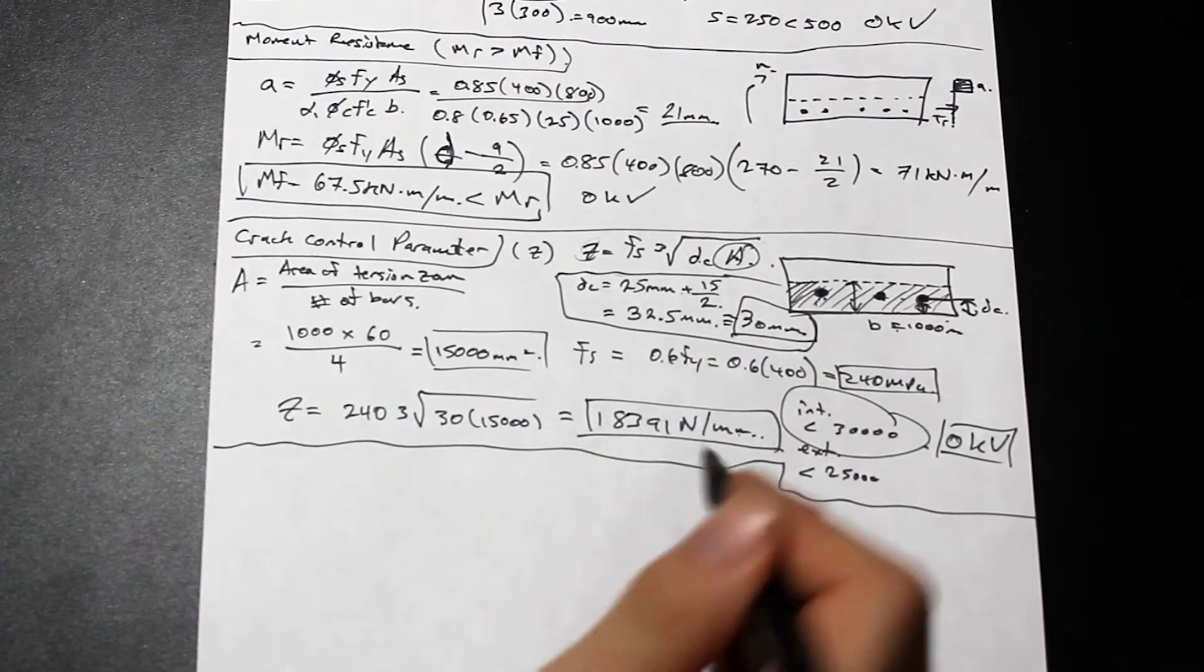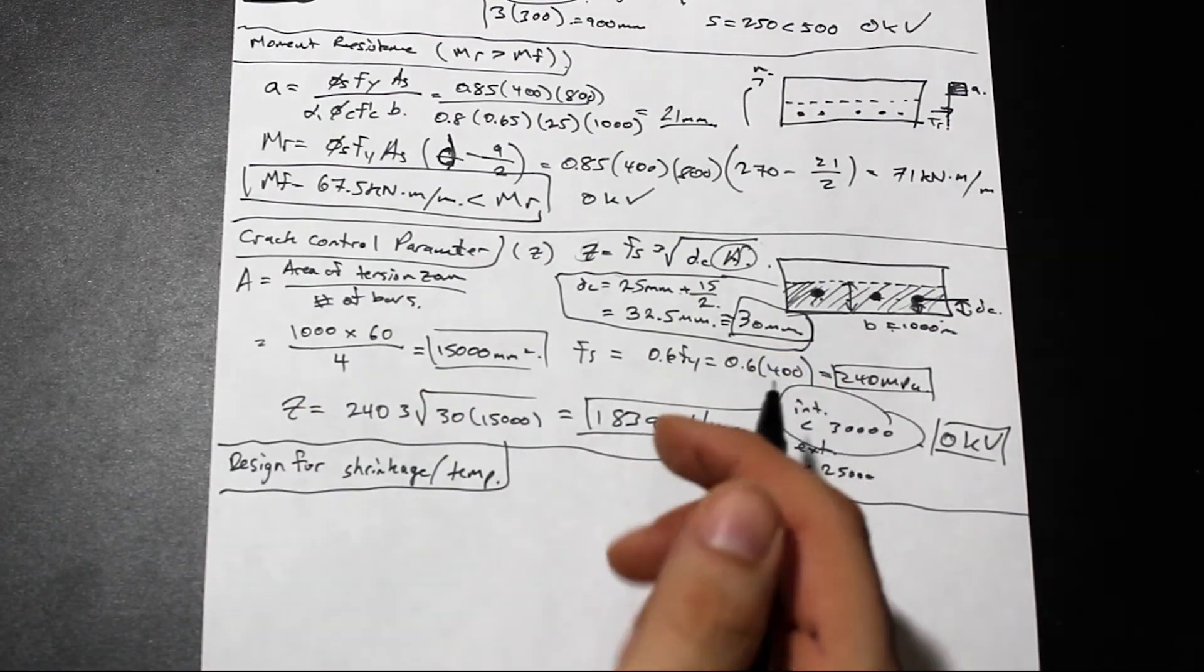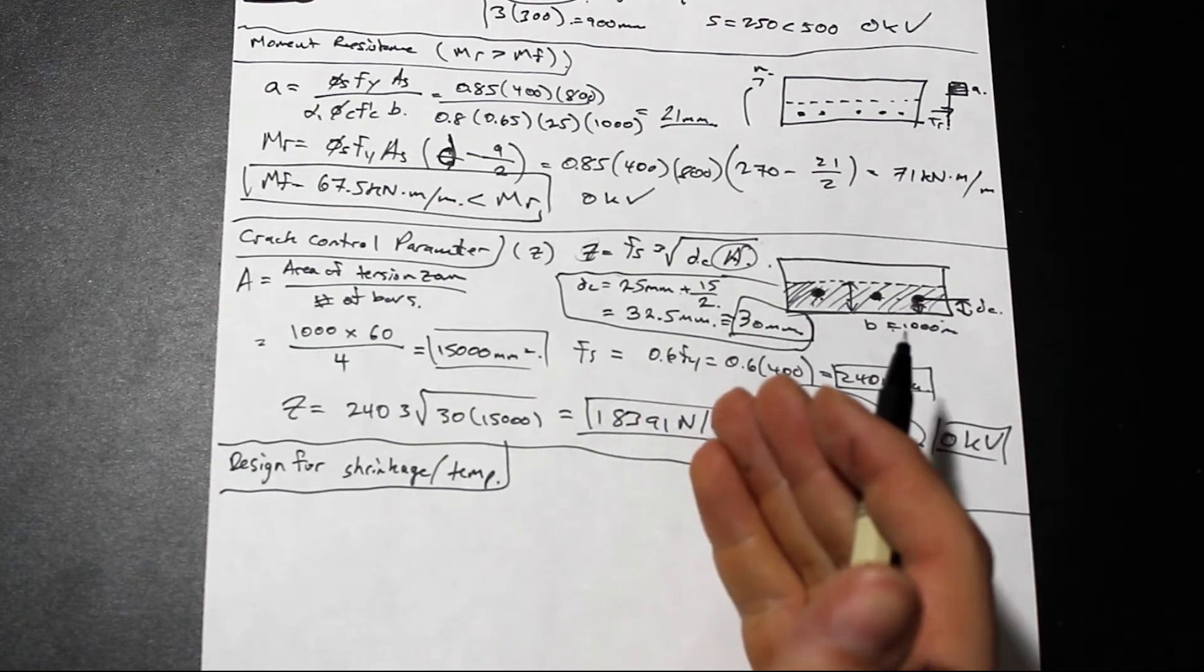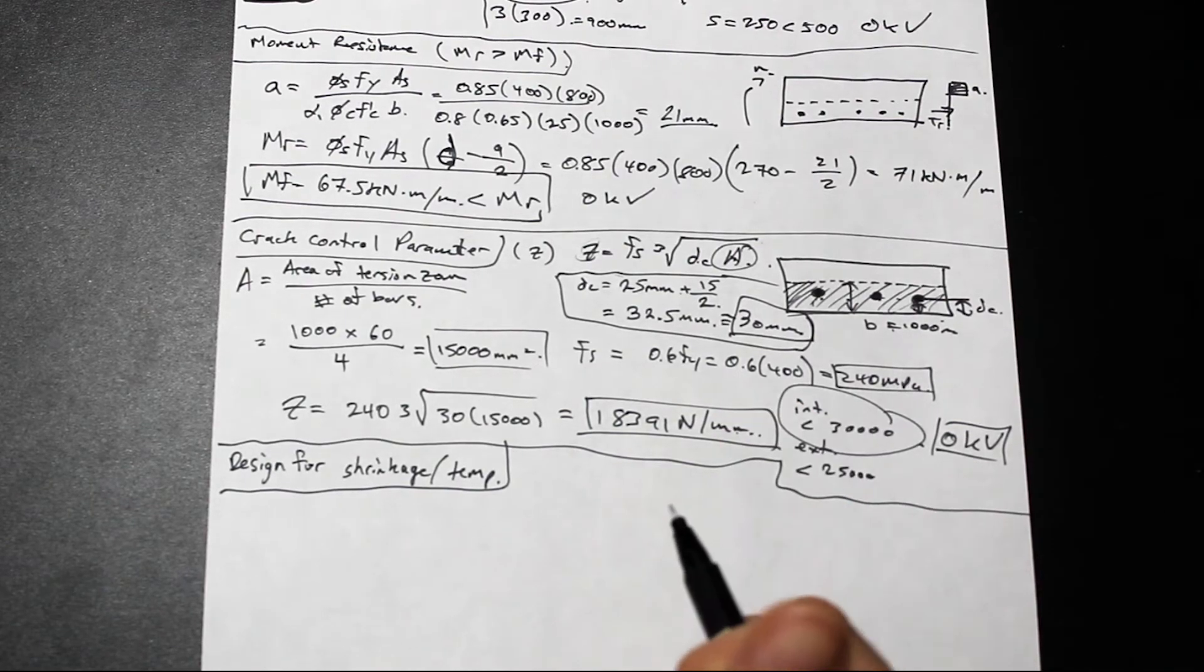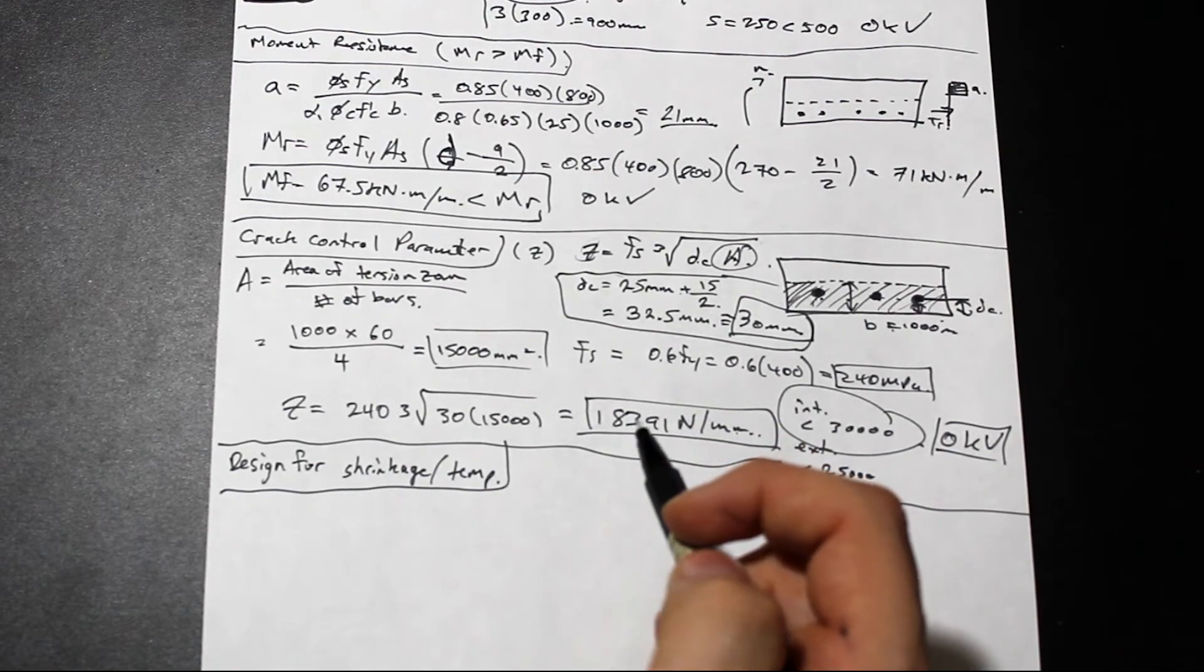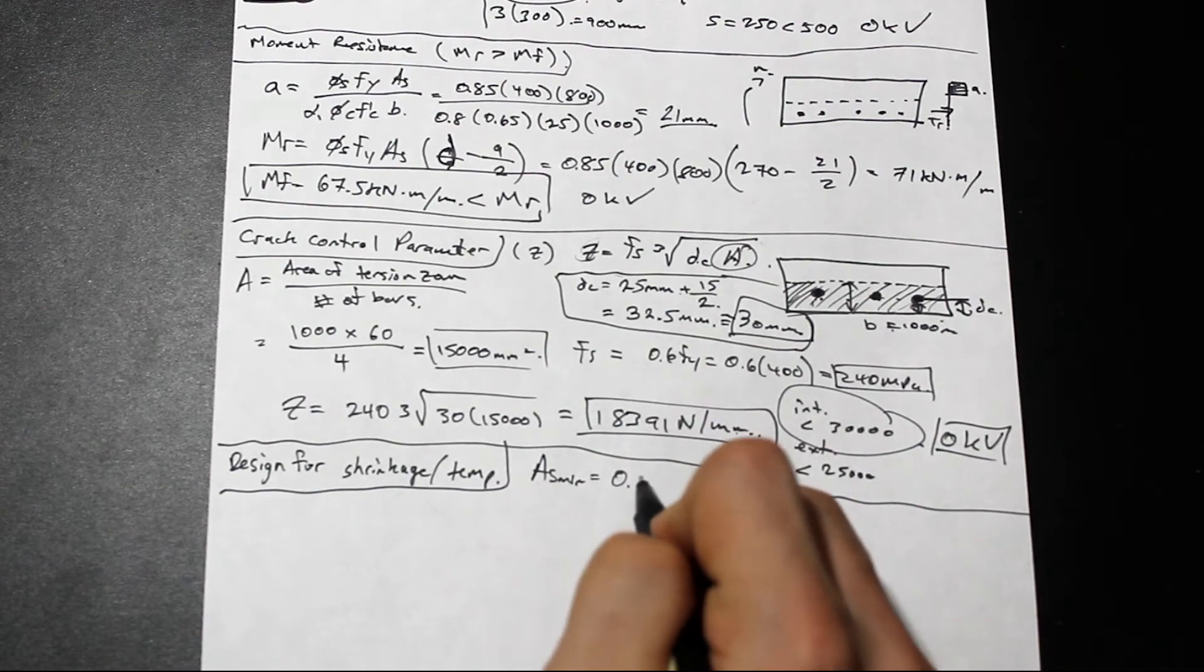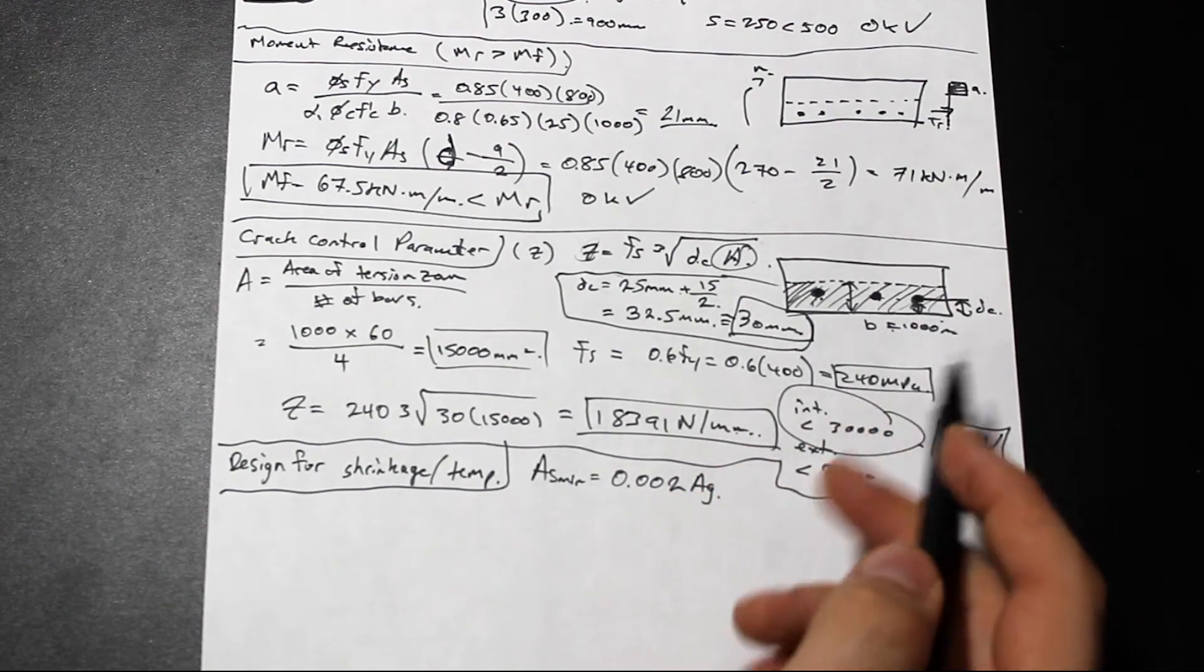Now that we've satisfied the crack control parameter, let's do one more thing here. We're going to design for shrinkage and temperature. Where our slab isn't really experiencing much flexure due to the superimposed load, we do want to provide just a minimum amount of reinforcement. So if the concrete shrinks, or if there's some temperature change and the concrete decides to be exposed to some shrinkage, it may crack. This minimum reinforcement will help us maintain the integrity of the slab in the long direction. The ASmin, the minimum required reinforcement in a horizontal direction according to the code is 0.002AG. AG is simply base times height of the slab.